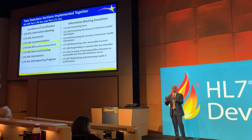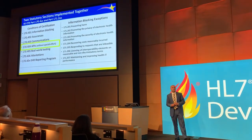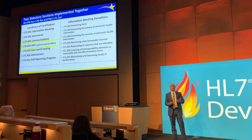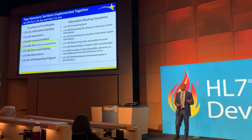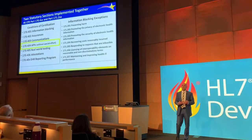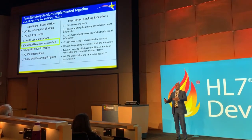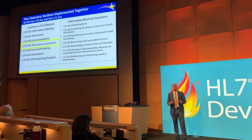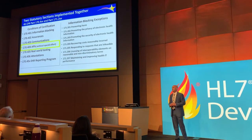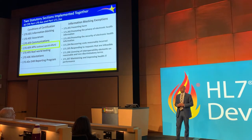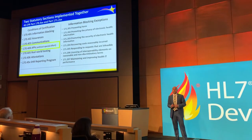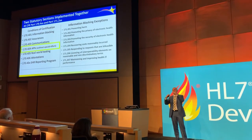To the right is the set of exceptions related to the information blocking section of the law. Congress established an overriding presumption that electronic health information will be exchanged — that's the presumption. When it needs to be accessed, exchanged, and used, electronic health information will be accessible. Congress then recognized certain limitations could prevent exchange and tossed it to the executive branch to work out the details. The provision requires exceptions for when it may be reasonable or necessary to withhold sharing. State law is a good example — if your state prohibits sharing certain information, that fits within one of these exceptions and you wouldn't be flagged as an information blocker.